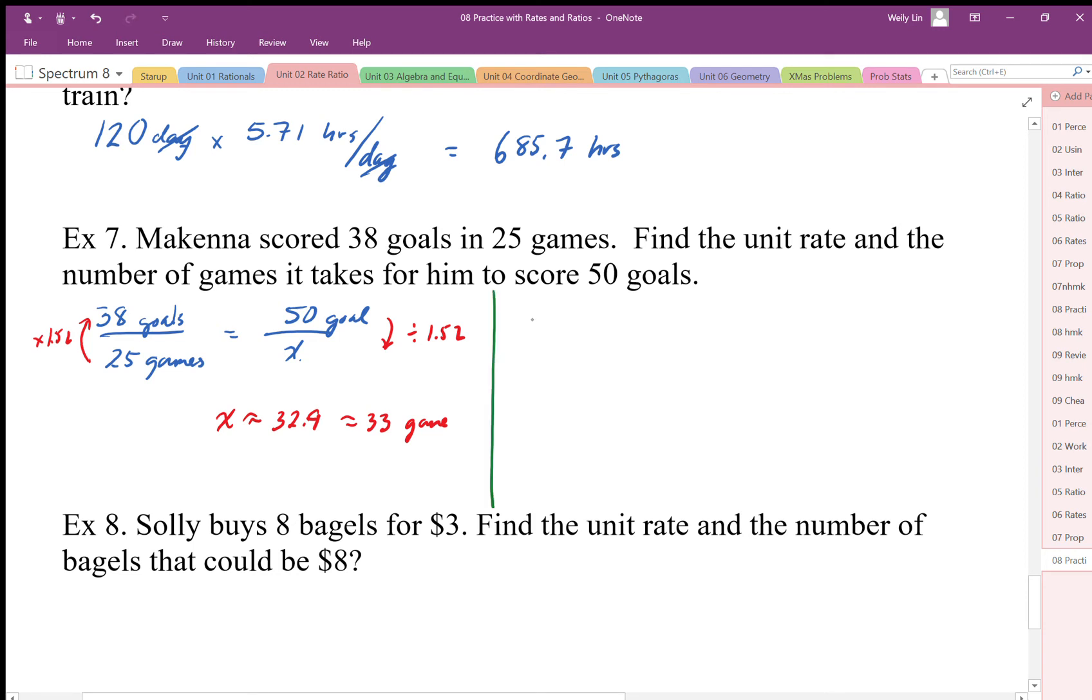Now we can set this up slightly differently. We can just say, well, we have 50 goals. There's our rate, so I'm going to multiply by that rate. The goals have to be on the bottom, games are on top, goals cancel out. And then when I multiply those two together, I get approximately, I get about the same, well in fact I do get the same, 32.9 games. That's our multiplying strategy to get to the same place.